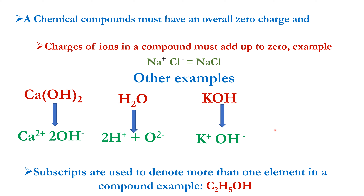Subscripts are used to denote more than one element in a compound. For example, in this compound, the subscript 2 shows that there are 2 carbon atoms, and the subscript 5 shows that there are 5 hydrogen atoms.